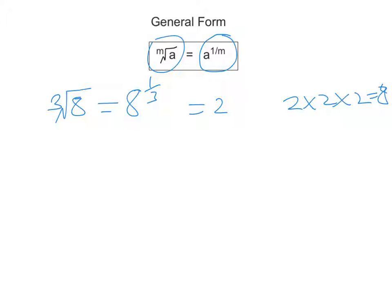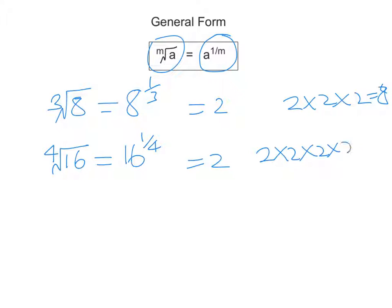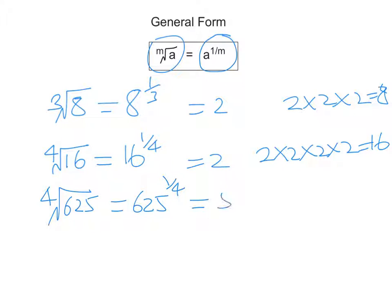Here's another example. The fourth root of 16 can be written as 16 to the quarter power. The answer to that is also 2, because 2 times 2 times 2 times 2 equals 16 — four lots of 2 multiplied together makes 16. Another example: the fourth root of 625 can also be written as 625 to the one quarter power, and the answer to that is 5, because 5 times 5 times 5 times 5 equals 625.